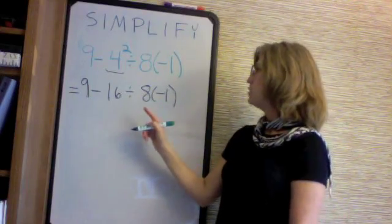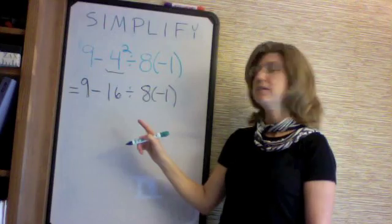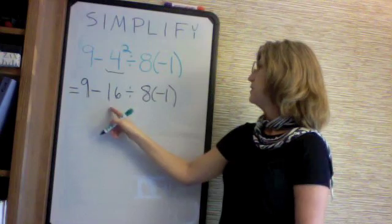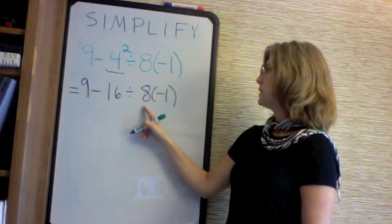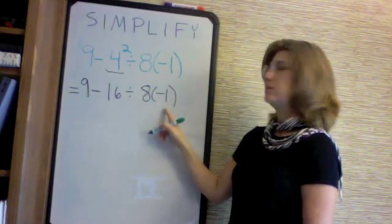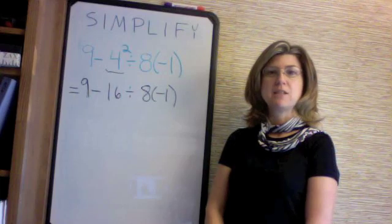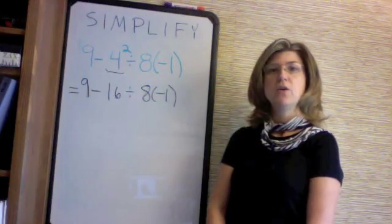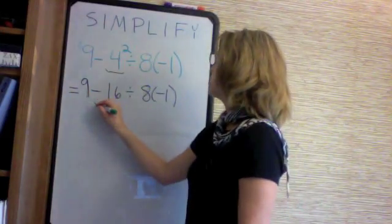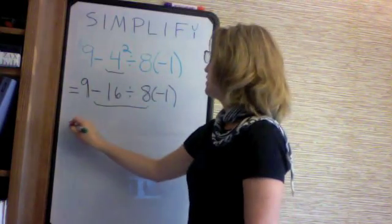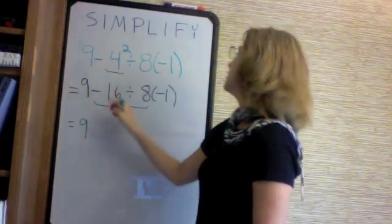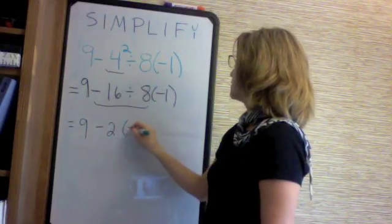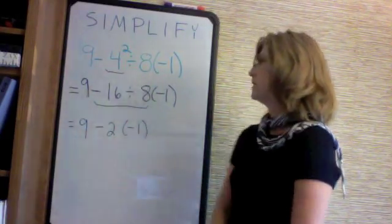Next we will do multiplication and division together from left to right. Here we have division — negative 16 divided by 8 — and then multiplication — 8 times negative 1. Remember, we don't do multiplication first and then division; we do multiplication and division together from left to right. Thus we will do our division first, which gives us: minus 16 divided by 8 is minus 2, times minus 1, which has not been simplified yet.